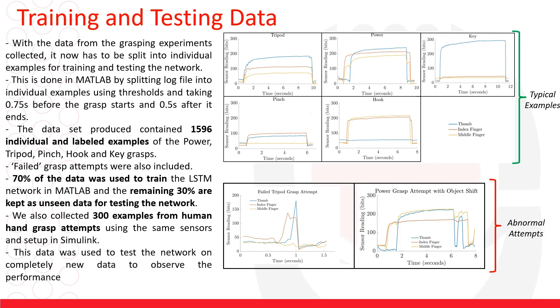Once we've collected the data the next stage is to split and label the data. We obtained 1,596 individual and labeled examples and we used 70 percent of the data for training and the remaining 30 percent we kept for testing the network once it's trained.